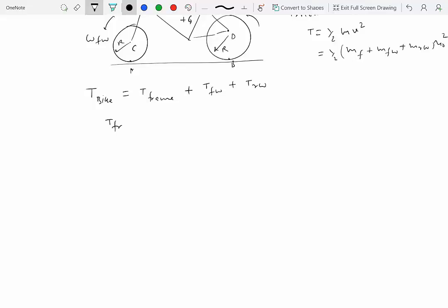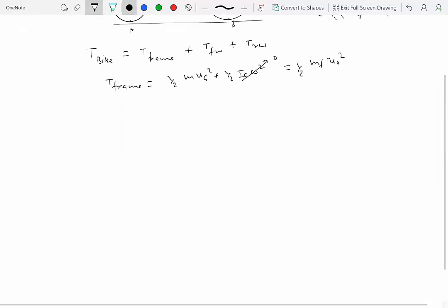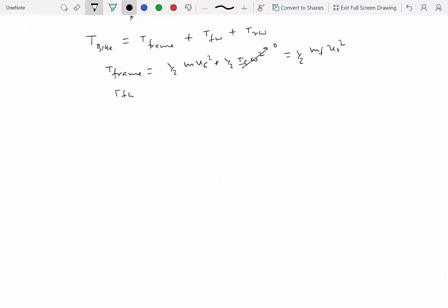So T of the frame, let's write each of these one by one. T of the frame is ½M V_G² plus ½I_G ω². Frame is not rotating, so this angular velocity is zero. So this is simply ½ mass of the frame times V₀ squared, every point of the frame is moving with the same constant velocity V₀. Kinetic energy of the front wheel is ½M V_G² plus ½I_G ω². So I'm writing the general expression first.